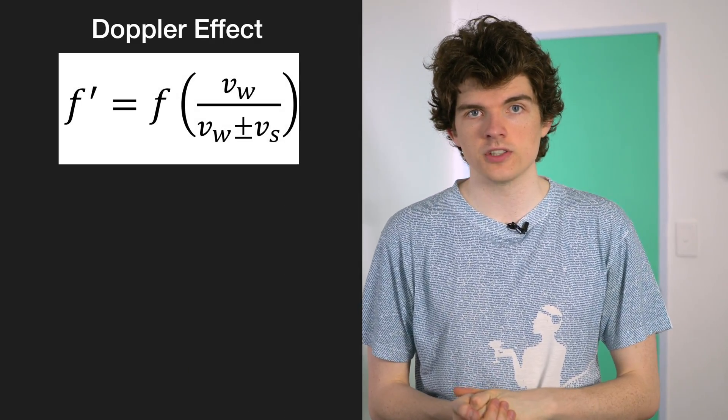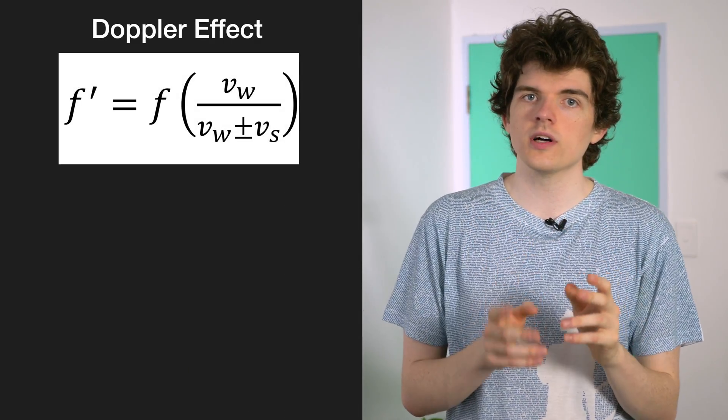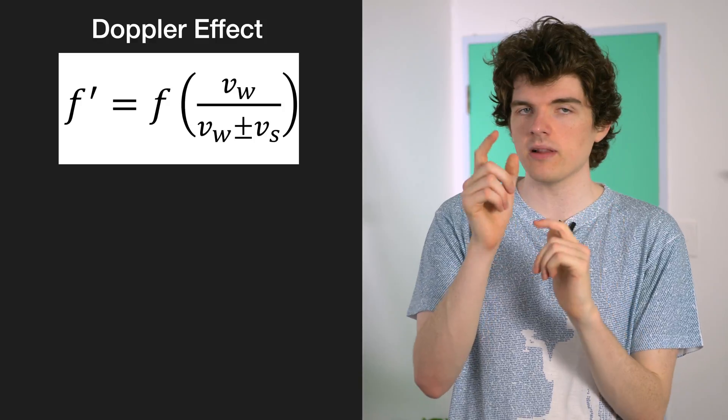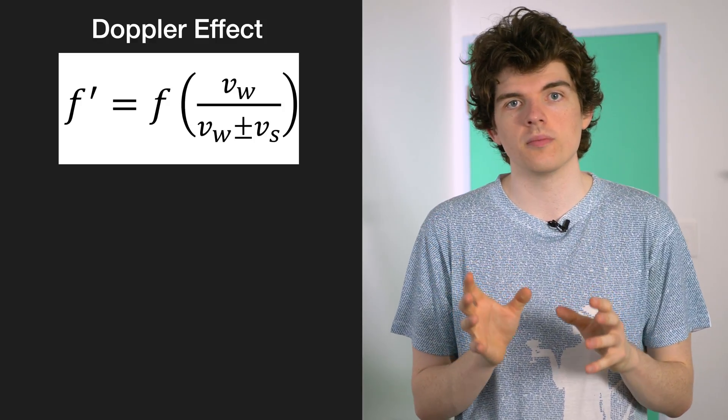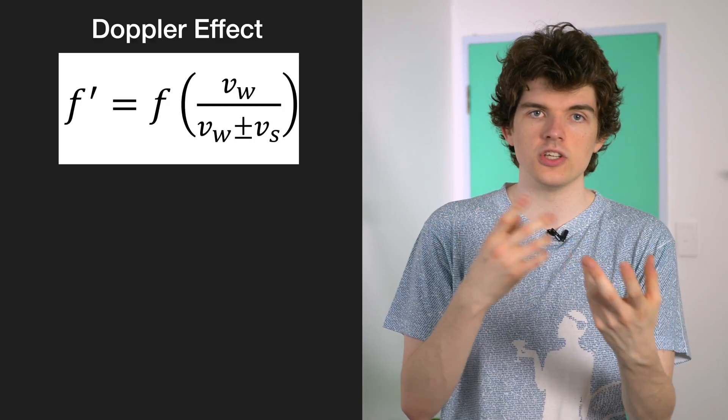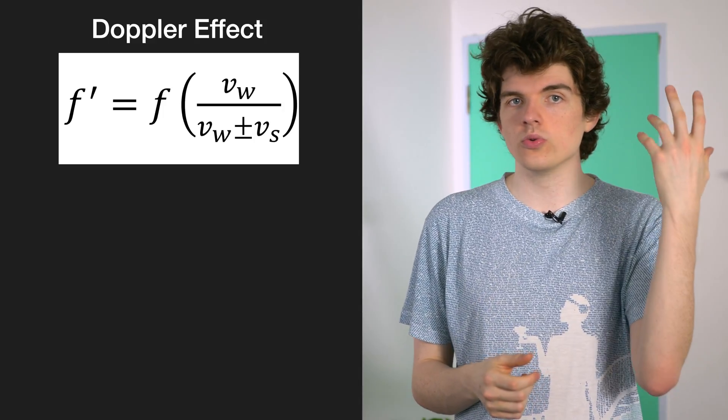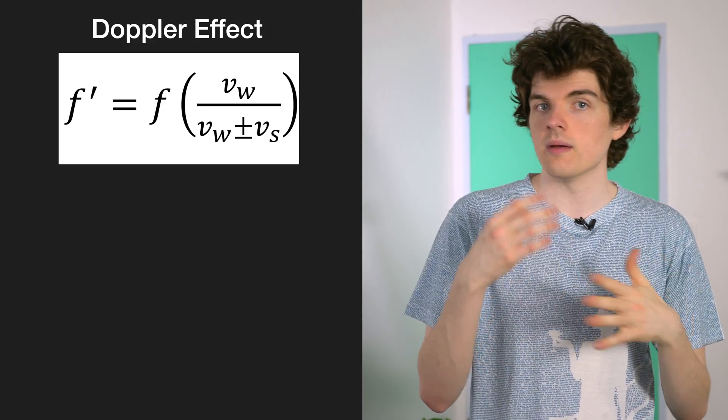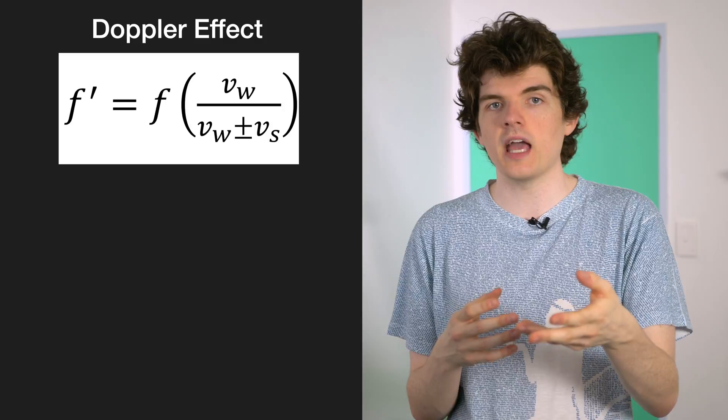Whenever you have a sound source moving towards or away from an observer, that's when you use the Doppler effect equation. This is one of the tricky equations in Level 3 Physics because it has that plus-minus sign on the bottom, and it's hard to know which one to use. To get around this, you can imagine the situation and what you expect to be happening to the waves.